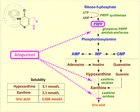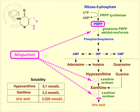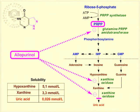Therefore, allopurinol decreases the total rate of purine nucleotide synthesis de novo. Less purine nucleotides are formed, and the reduced synthesis of purine nucleotides decreases the formation of uric acid too.